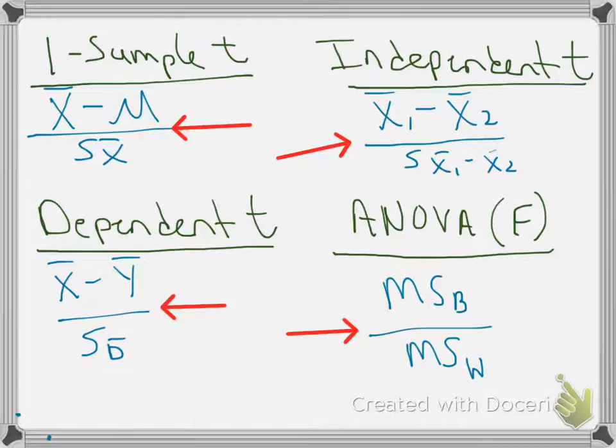Here's how it works. The top of this — the MSB — is just like the top of the t-test formulas: what is the difference between my observed sample means? But because the ANOVA can handle more than two sample means, it needs to find an average difference between the sample means. So on average, how different are these sample means?